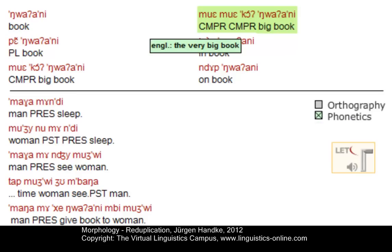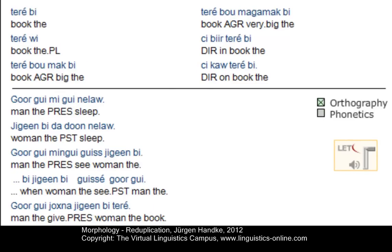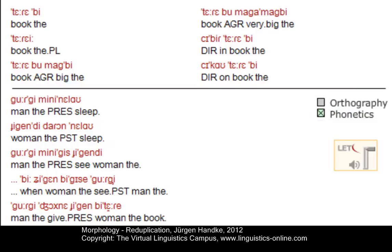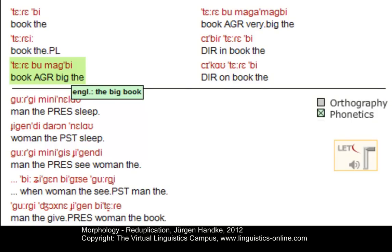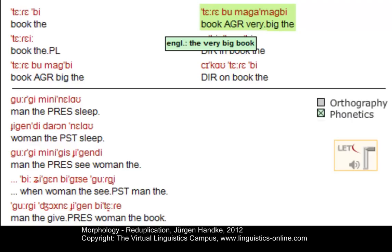The next example is from Wolof, another Niger-Congo language spoken in Senegal. Whereas in the previous examples from Indonesian and Medumba we had total reduplication, here we have partial reduplication. 'The big book' is 'erebu makbi', and 'the very big book' is 'erebu maga-makbi'. Maga-makbi versus makbi — here we see partial reduplication.